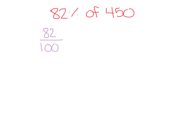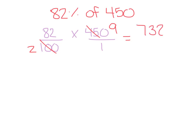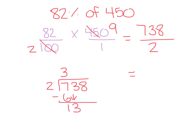Now we have 82% of 450. Write it as a fraction: 82 over 100 times 450 over 1. Check to see if you can cross simplify — divide both 100 and 450 by 50: 100 divided by 50 is 2, and 450 divided by 50 is 9. Multiply across: 82 times 9 is 738, and 2 times 1 is 2. We need to divide to simplify: 738 divided by 2 — 2 goes into 7 three times with remainder 1, bring down 3, 2 goes into 13 six times. So our answer is 369.